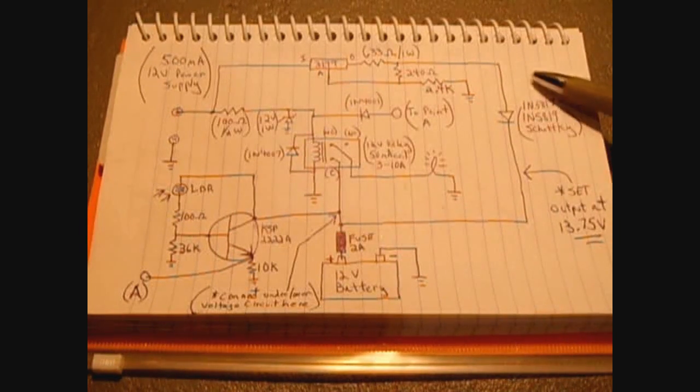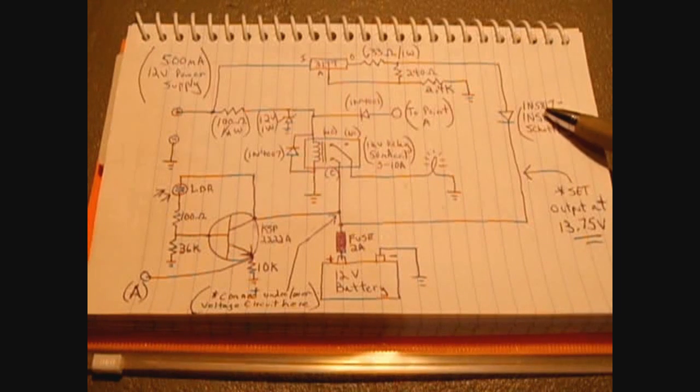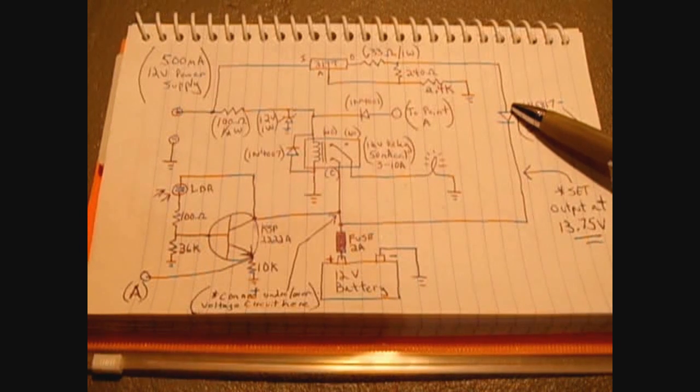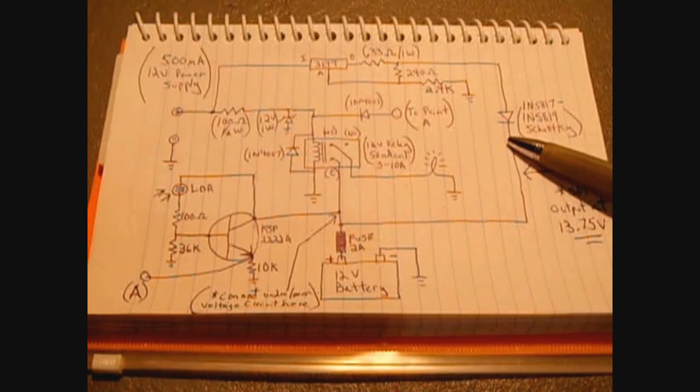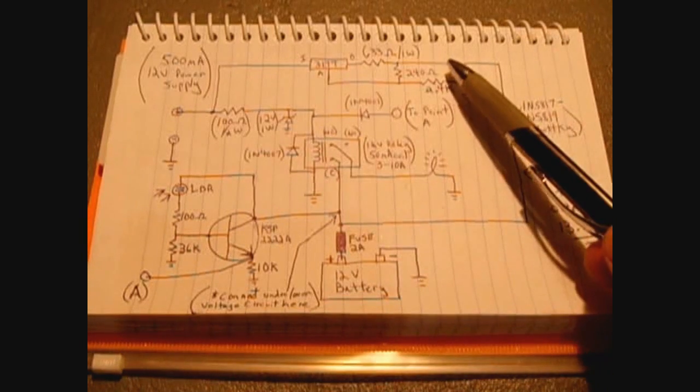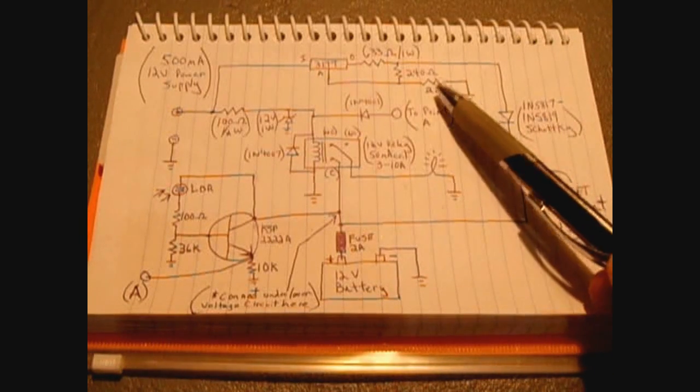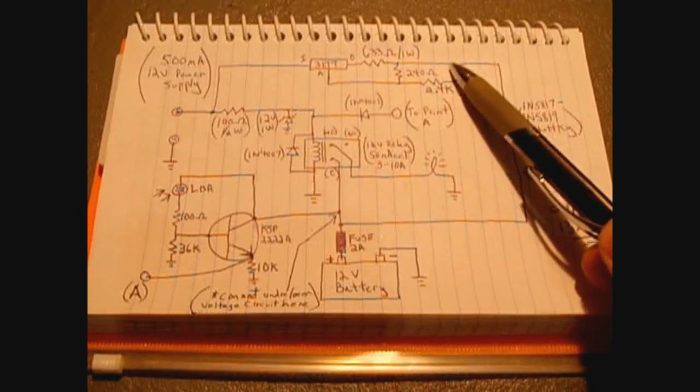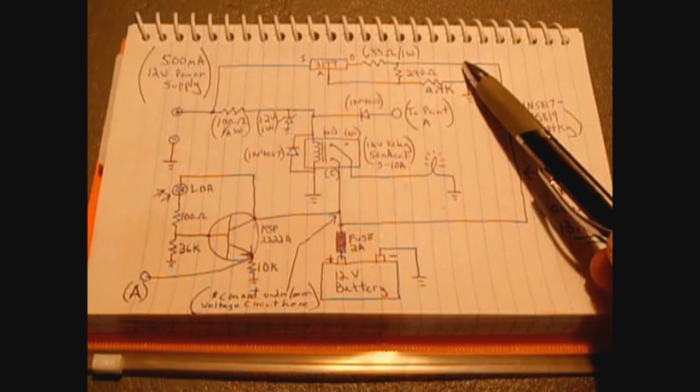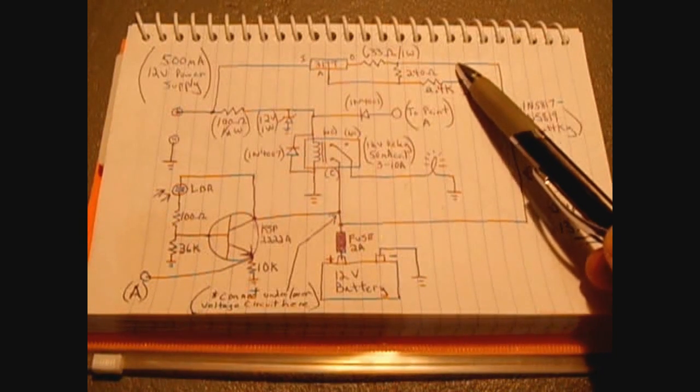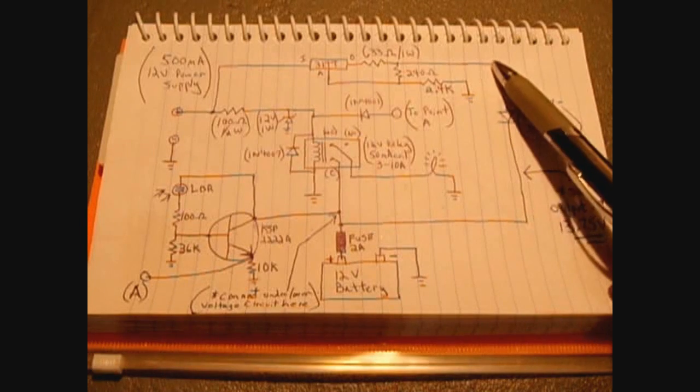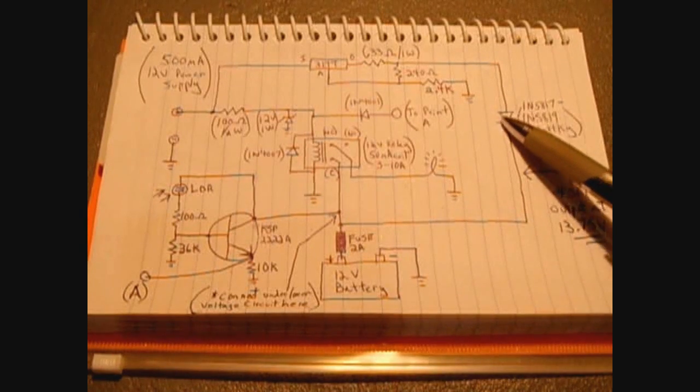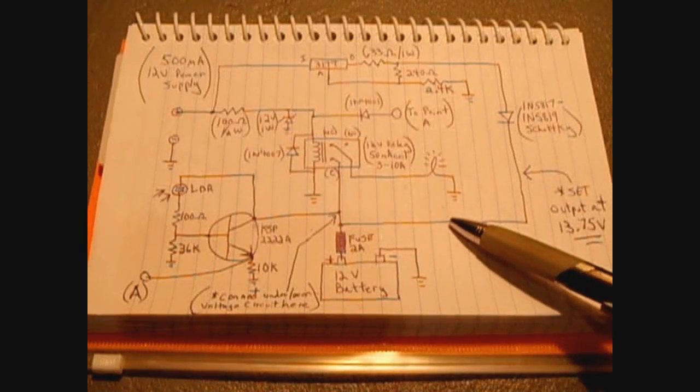Because it's going to be flowing through the Schottky diode, a 1N5817 to 5819, those will be fine. This will reduce the voltage by maybe 0.15 to 0.2 volts. So you're going to want to adjust the potentiometer here to get the output to be around 13.9 to maybe 14 volts. So when it flows through, you'll have a little bit of that voltage drop and you'll end up with 13.85 or 13.75 volts.